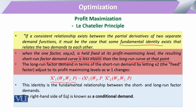The profit-maximizing level depends upon x1 — the amount of input 1 — which utilizes w1, w2, and price p. This can be equated so that xi equals a function of w1, p. Because we have fixed x2, and x2 gives us the aspect of w2 kept constant, we take w1, w2, and p and substitute this value. This identity is the fundamental relationship between the short-run and long-run factor demand curves.